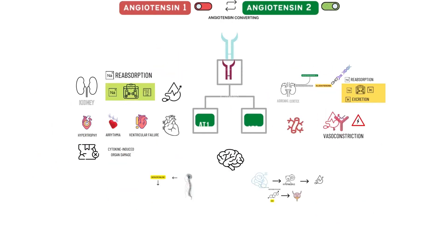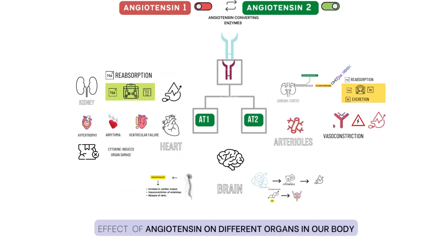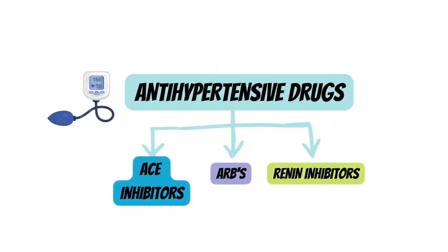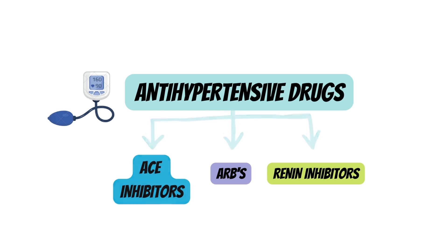RAS is frequently manipulated to treat various heart conditions like hypertension, heart failure, diabetes mellitus, and acute myocardial infarction. In the next videos, we will learn about the antihypertensive class of drugs, including ACE inhibitors, ARBs, and renin inhibitors.